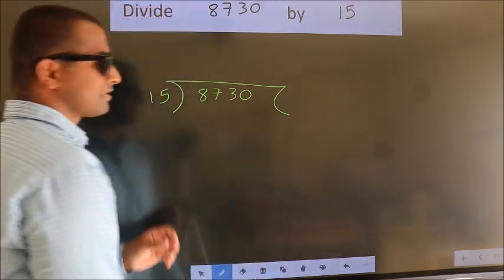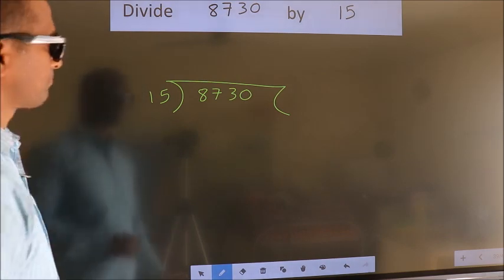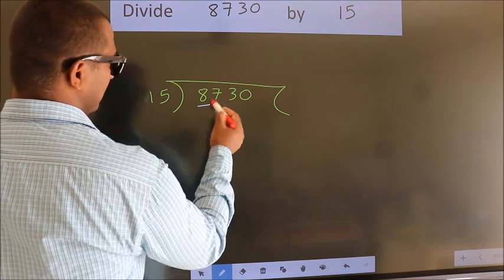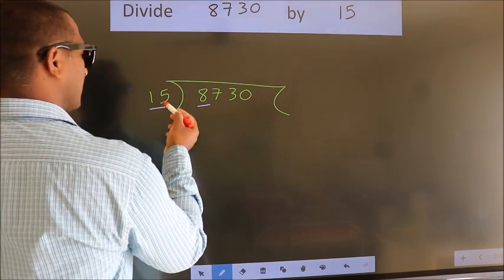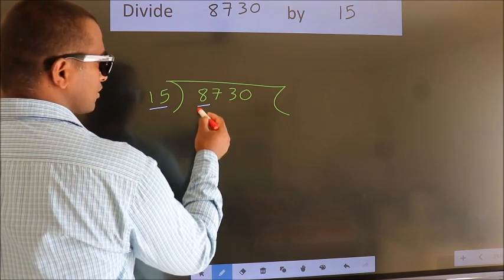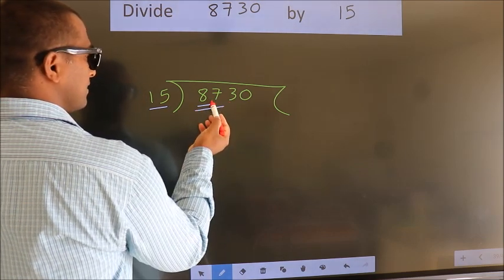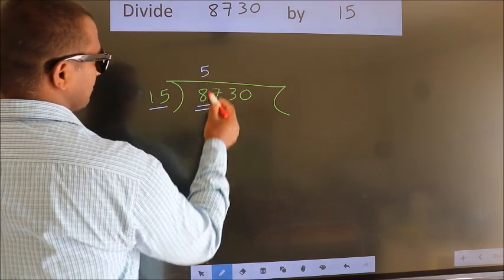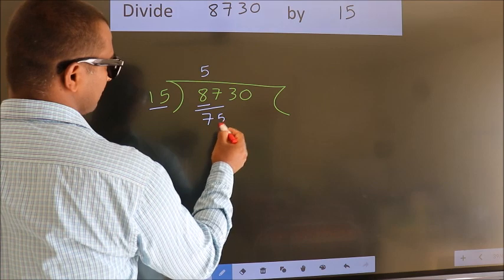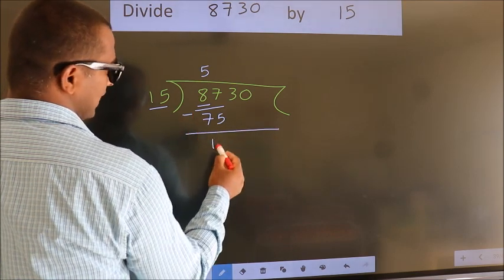This is your step 1. Next, here we have 8, here 15. 8 is smaller than 15, so we should take two numbers: 87. A number close to 87 in the 15 table is 15 fives, 75. Now we should subtract. We get 12.